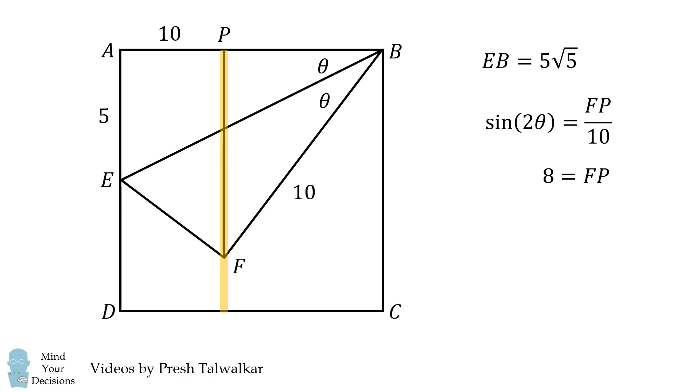FP is equal to 8, but the entire vertical distance is equal to the side of the square. Consequently, the distance from F to the side DC is equal to 2, just as before.